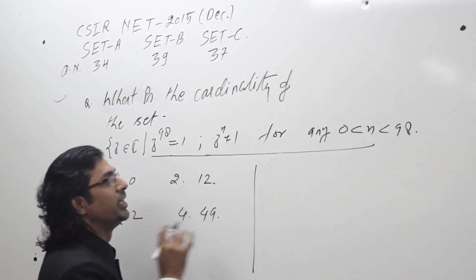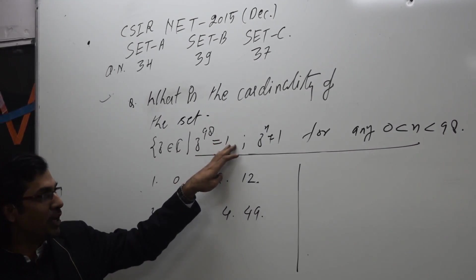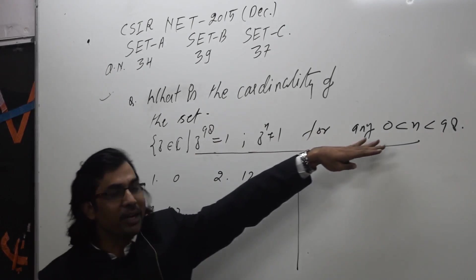The concept of this question is to find those complex numbers which satisfy this equation: z to the power 98 equals 1, and not 1 if n is less than 98, given by this condition.